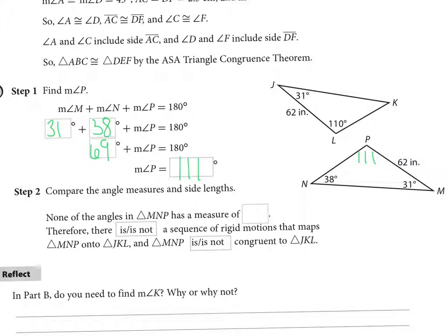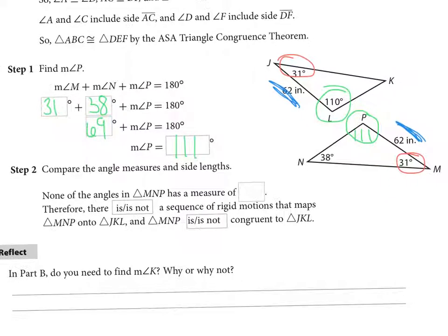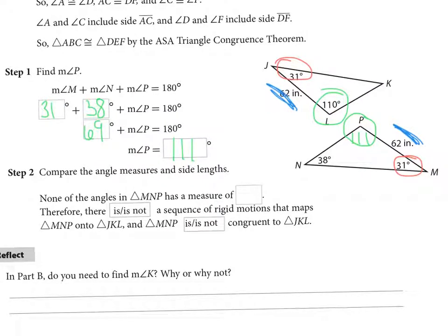So now I can look and see, I have 31 degrees here and 31 degrees there. There's an angle. So now I look, and I've got 62 degrees right here at this side and 62 degrees on that side. And then if I look here, I've got P is 111, and this P is 110. So these triangles are not congruent. I do not have angle, side, angle, because that angle I marked in green is not congruent to each other.